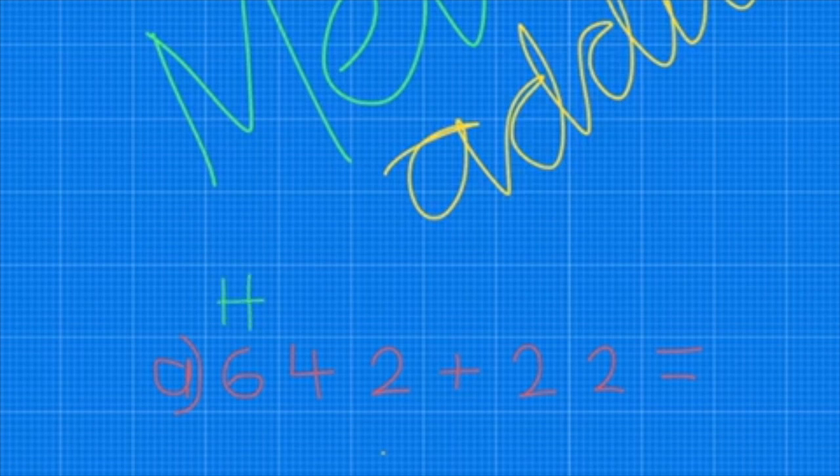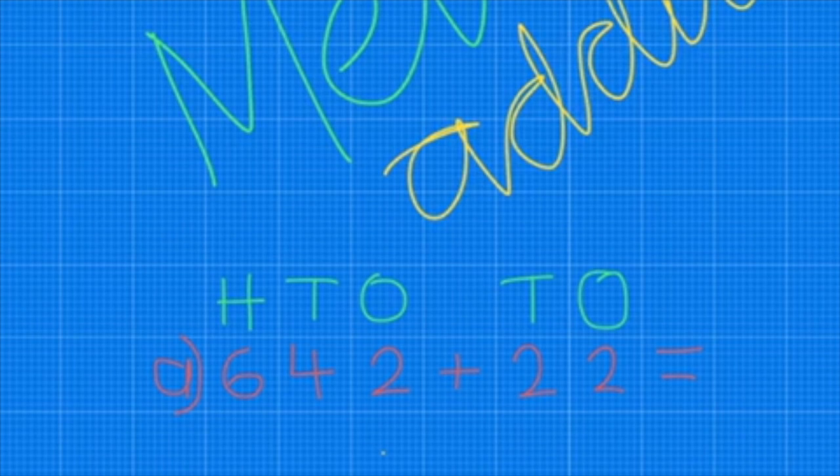I can see that it's got 6 hundreds, 4 tens, and 2 ones, plus 2 tens and 2 ones. So I can then lay out the number just like this.